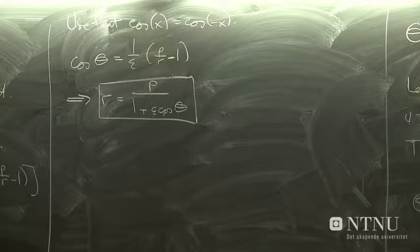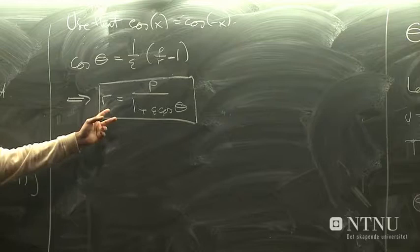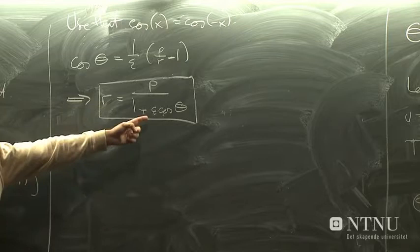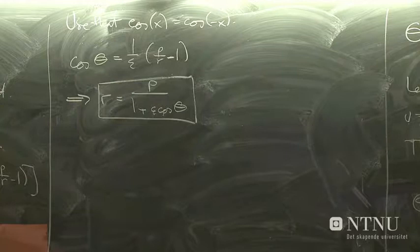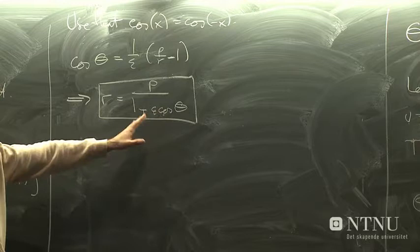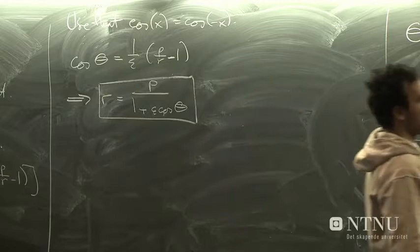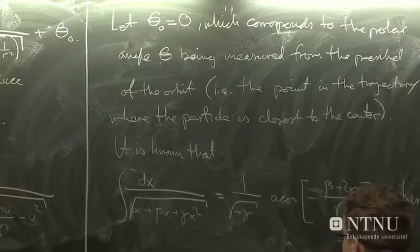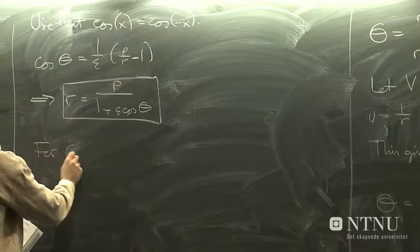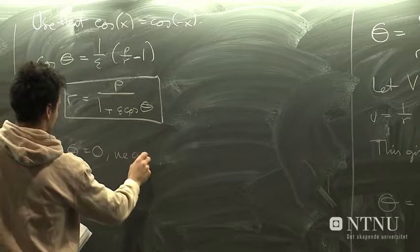If we now introduce these two quantities, the eccentricity and the orbit parameter, we can write theta like this. If we now make use of the fact that cosine of some quantity is equal to cosine of minus that quantity, we get this by taking cosine on both sides. And this is a pretty neat form, I think, for r as a function of theta. So it describes how the radius of the trajectory of the particle depends on the angle. And it's expressed solely in terms of these two parameters, the orbit parameter p, and the eccentricity epsilon.